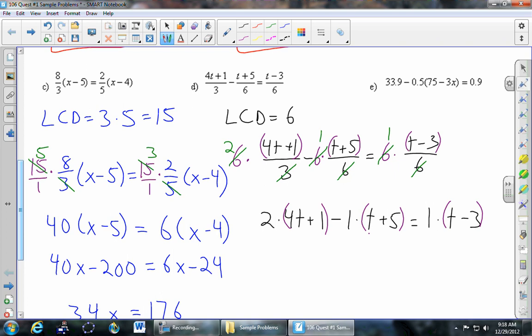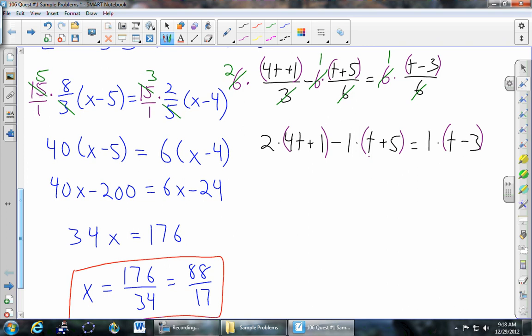So now we'll distribute through. The 2 comes in. The minus sign comes in and changes both of the signs. And then 1 doesn't do anything on this side, so we'll just copy t minus 3. And now finally it looks pretty easy. So let's combine on the left side. 7t minus 3 equals t minus 3.